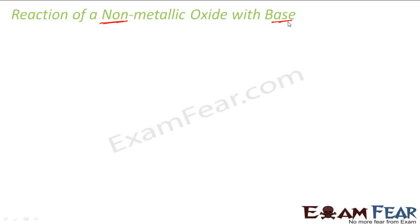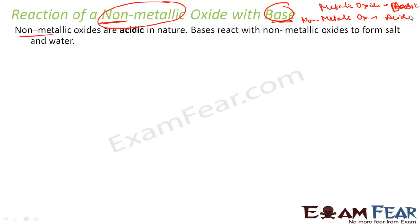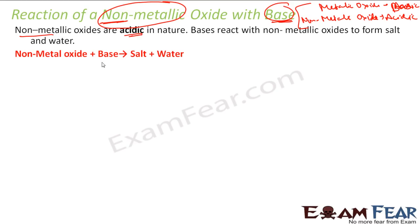We will now do non-metallic oxide with base. Please note: it was metallic oxide with acid; now it is non-metallic oxide with base. Metallic oxide with base won't react because metallic oxide is basic in nature. Non-metallic oxides are acidic in nature, and that is the reason why they will react with base. Metallic oxide is basic in nature, and non-metallic oxide is acidic in nature. So non-metallic oxides are acidic in nature and they react with base to form salt and water.